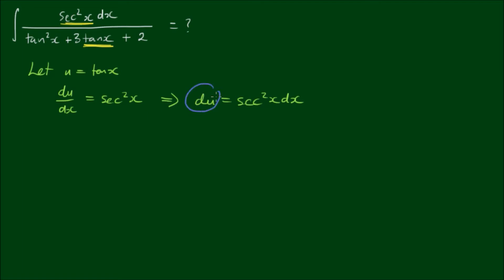So now we can make the substitution du for sec squared x dx, and we can substitute u into tan x. So we can rewrite the integral as the integral of du divided by u squared plus 3u plus 2.